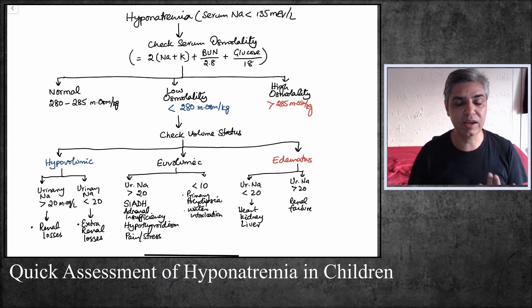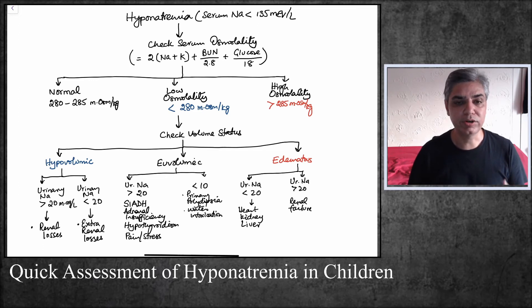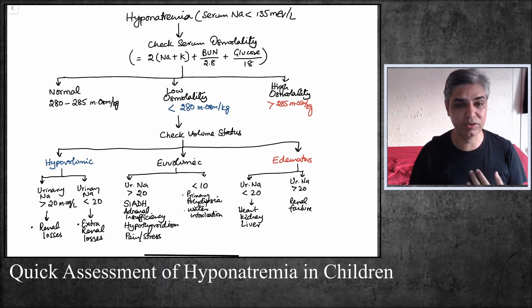Urinary sodium excretion can be high when it is more than 20 mEq/L. If it is more than 20, it means there are renal losses, because normally if serum sodium is low, the kidneys should conserve sodium. If they are not doing their job, something is wrong with the kidneys — conditions like renal tubular acidosis. If urinary sodium is less than 20, the child is likely dehydrated and losing salt from extra-renal causes such as vomiting, pancreatitis, or gastroenteritis.